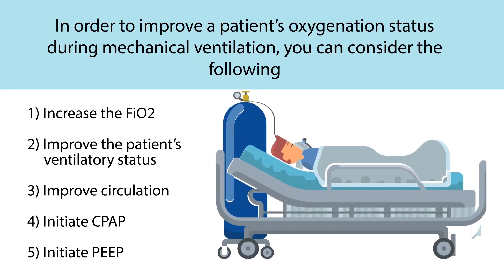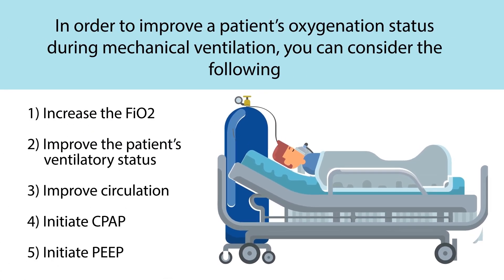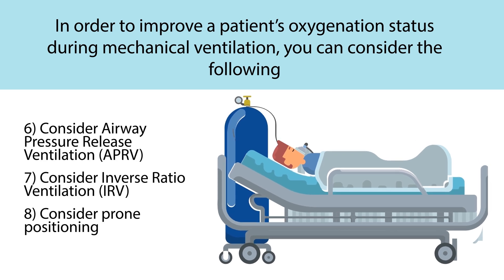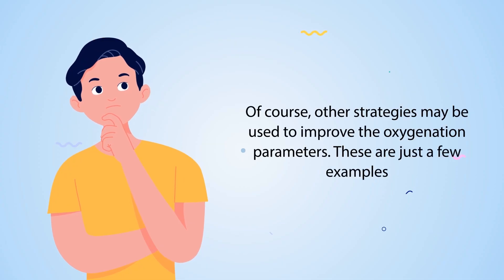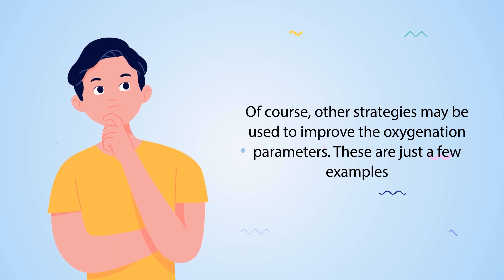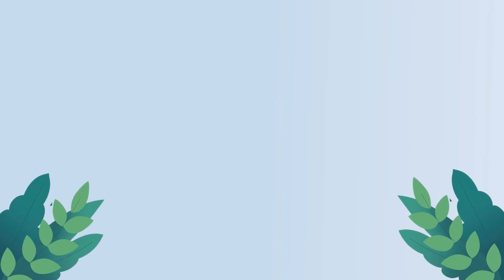In order to improve a patient's oxygenation status during mechanical ventilation, you can consider the following: increase the FiO2, improve the patient's ventilatory status, improve circulation, initiate CPAP, initiate PEEP, consider airway pressure release ventilation, consider inverse ratio ventilation, or consider prone positioning. Other strategies may be used to improve oxygenation parameters — these are just a few examples.